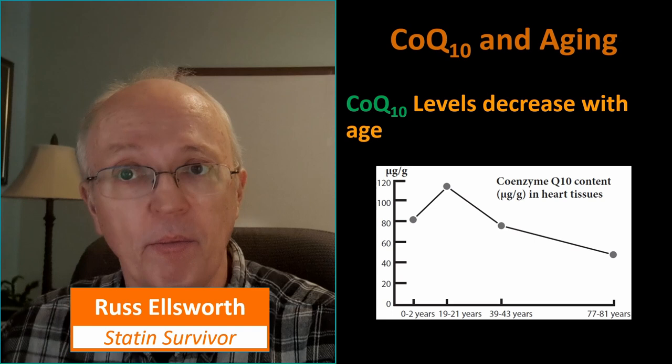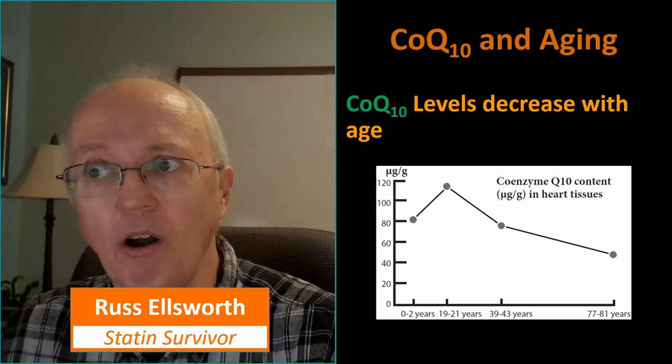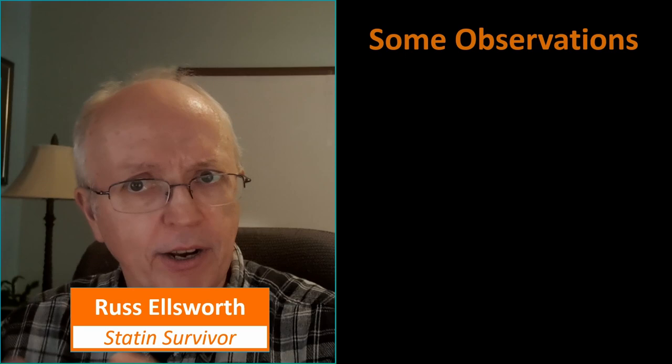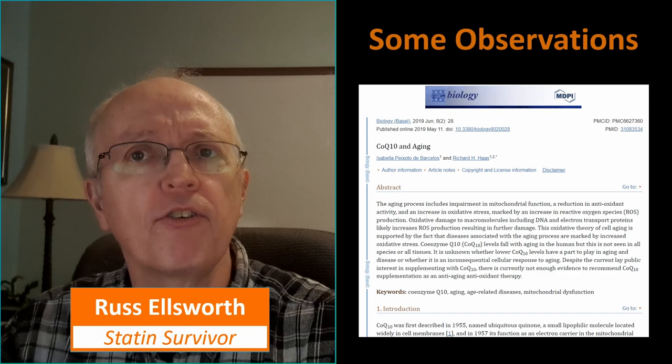Let's look at CoQ10 and aging. CoQ10 levels decrease with age. You'll see here, this is per gram — there are a certain number of micrograms per gram in our heart tissues, as an example. It reaches its peak around age 20 or 21, falls off rapidly for the next 20 years, and then a little more slowly until we get into our 80s. By the time we're 80, the amount of CoQ10 in our tissues is about half of what it was in our 20s. I found a paper called CoQ10 and Aging — 16 solid pages of information, with 163 more references to chase down — and I used it as a good roadmap.